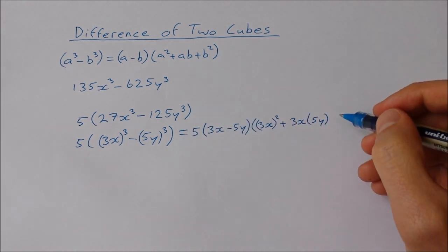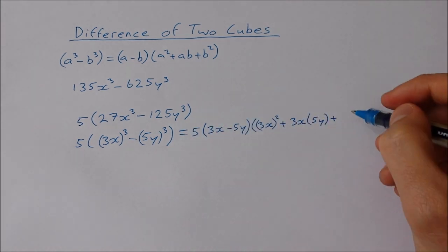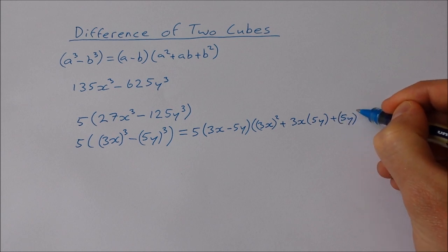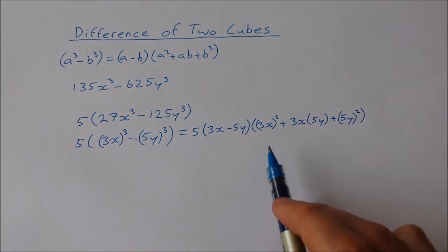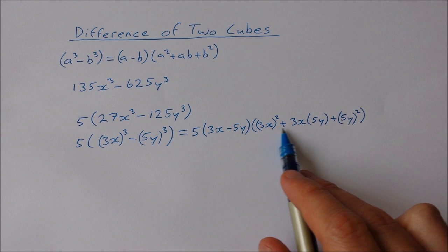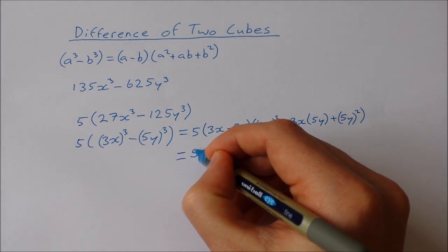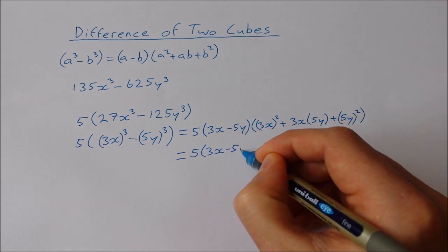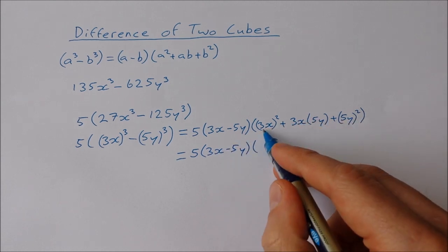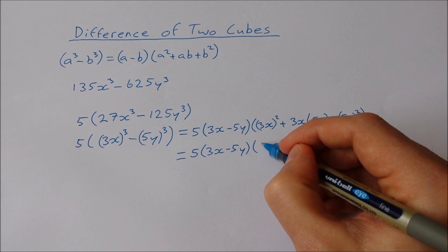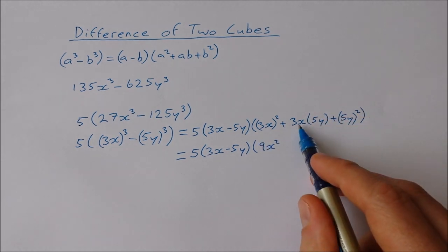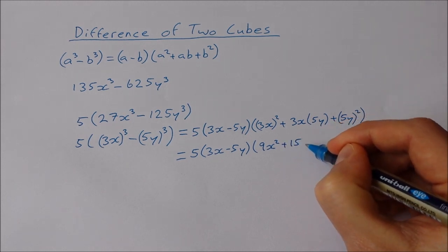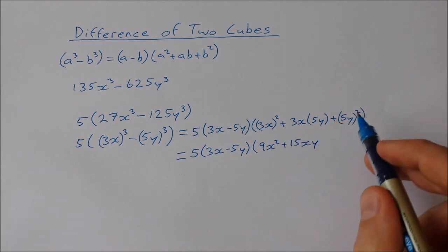Now I just have to tidy up inside these brackets. So I'll get 5 times (3x-5y) times, now 3x squared is going to give us 9x², 3x by 5y is going to give us 15xy, and then 5y times 5y is going to be 25y².